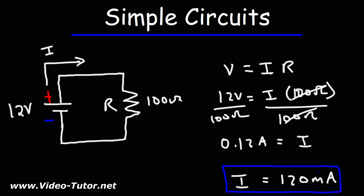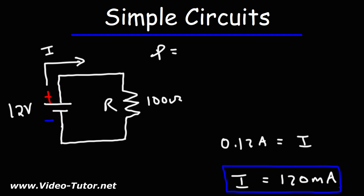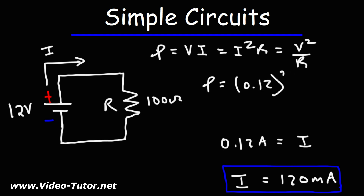Now that we know the current flowing through the resistor, how much power is dissipated by it? We can calculate the power dissipated using these formulas: P = V × I, P = I²R, and P = V²/R. You can use any one of those variants. Using P = I²R, that's going to be 0.12 squared times the resistance of 100 ohms. So the power dissipated by this resistor is 1.44 watts.